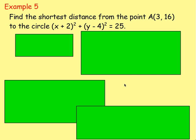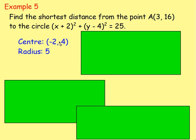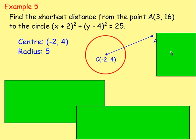Example 5: find the shortest distance from the point A, which is 3, 16, to the circle x add 2, all squared, plus y take away 4, all squared, equals 25. From the equation, the centre is negative 2, 4 and the radius is 5. Sketching this: you want the shortest distance from point A at 3, 16 to the circle with centre negative 2, 4.